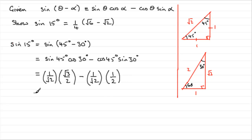Now we just need to tidy this up. For the first term we've got 1 times root 3, which is root 3, over root 2 times 2, which is 2 root 2, minus 1 times 1 here is 1, over 2 root 2 again.